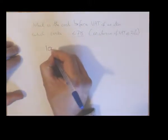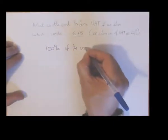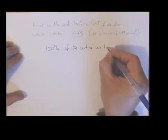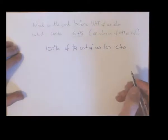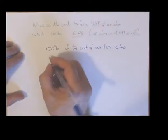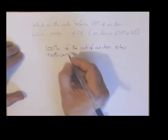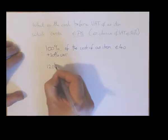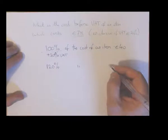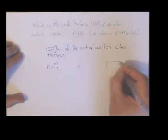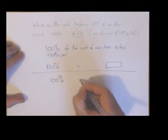If you remember in the last section, we wrote down that 100% of the cost of an item was — for example, let's say it's 40 euro — and we wanted to know what it would cost with VAT of 20%. So we said we're going to add 20% VAT, which of course brings it up to 120% of the original cost.